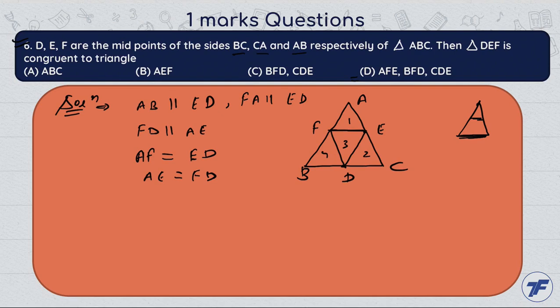Yarni ki AF, yahan se humare paas kya ho jayega? Third wale triangle, yarni ki joh bhi humare paas given EDF, us ki kya ho jayega? Congruent. Toh hum kya saktay hai ki triangle first congruent hai humare paas triangle second and congruent triangle third and congruent triangle four.